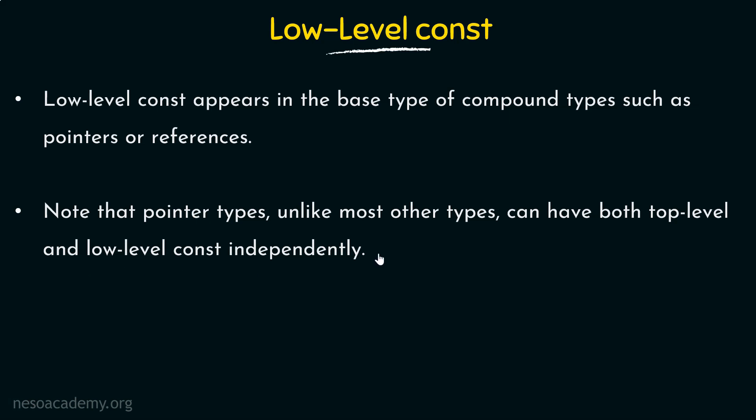Why can pointers have both? Because a pointer being a constant by itself is a top-level constant, and in the same definition, it also tells us where the pointer can point to. If those objects to which the pointer can point are also constants, then that constant is a low-level constant. So in the same definition, we can have both top-level and low-level constants independently in case of pointers. It will become clearer when we take examples.